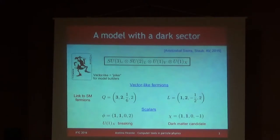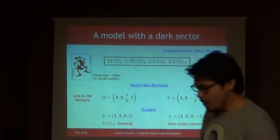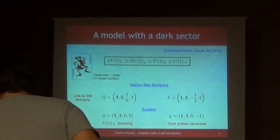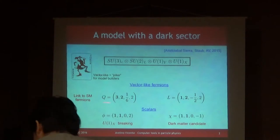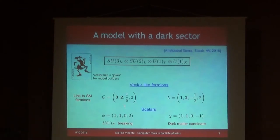We have some vector-like fermions. Basically, you have a copy of the standard model quarks, but vector-like and with a charge 2 under this U1X. And a copy of the standard model leptons, a vector-like copy, with a charge 2. These are the new fermions of the model, and we also have one generation for each.